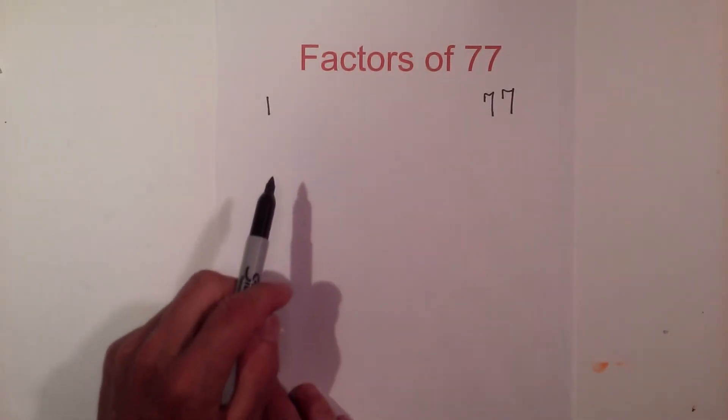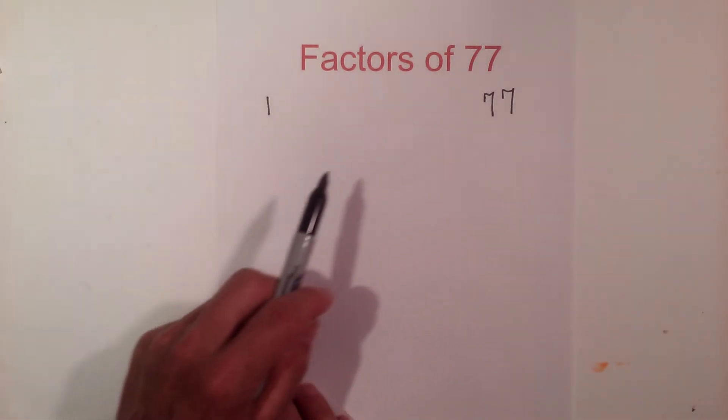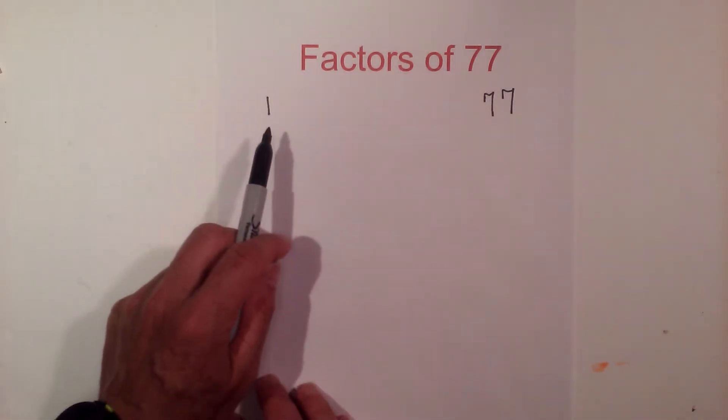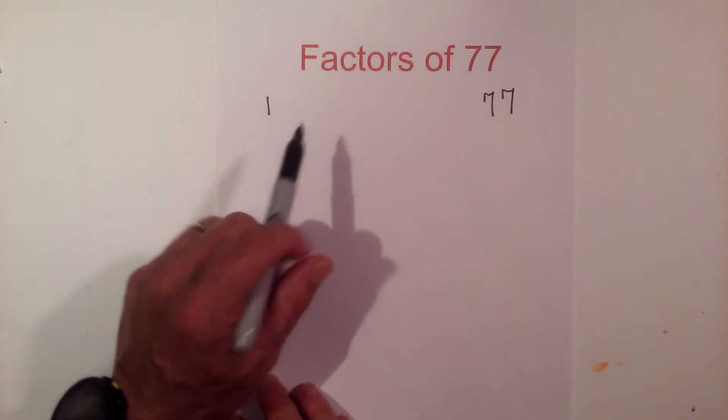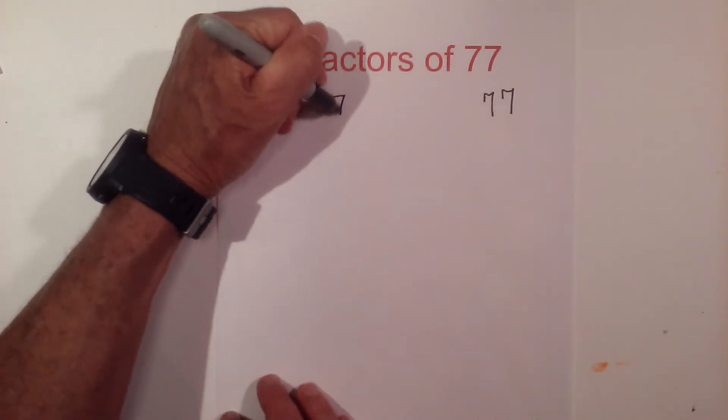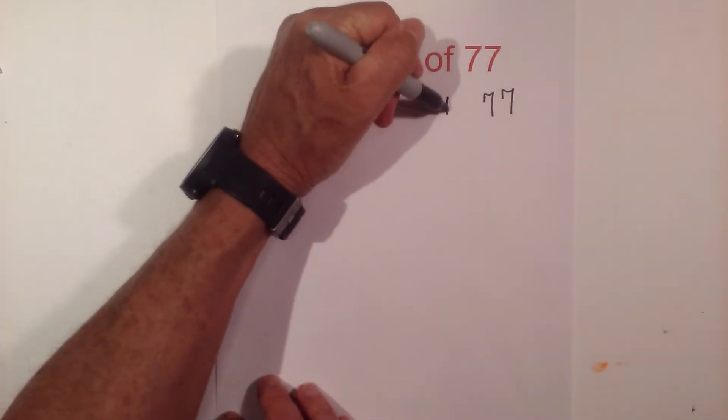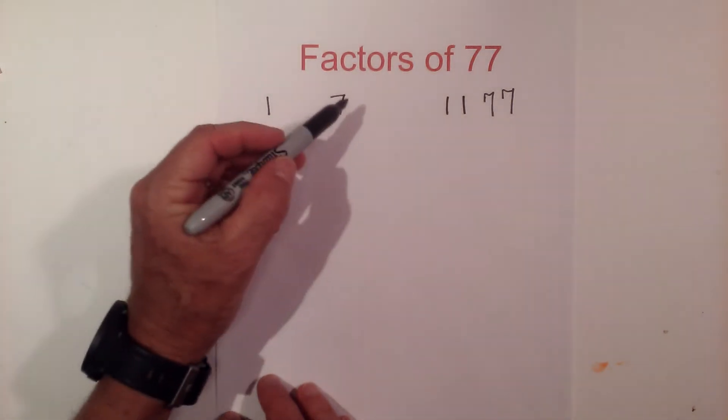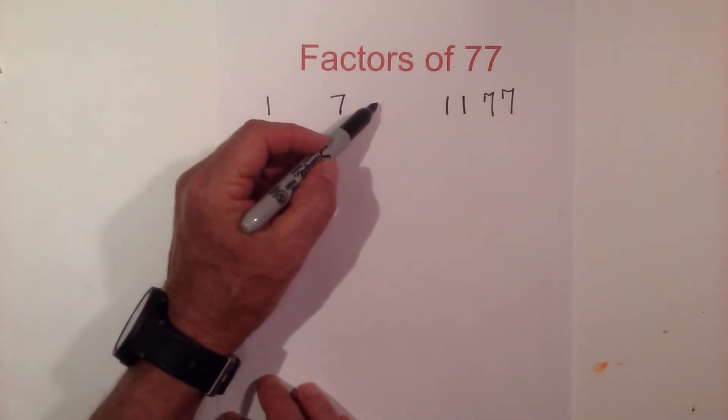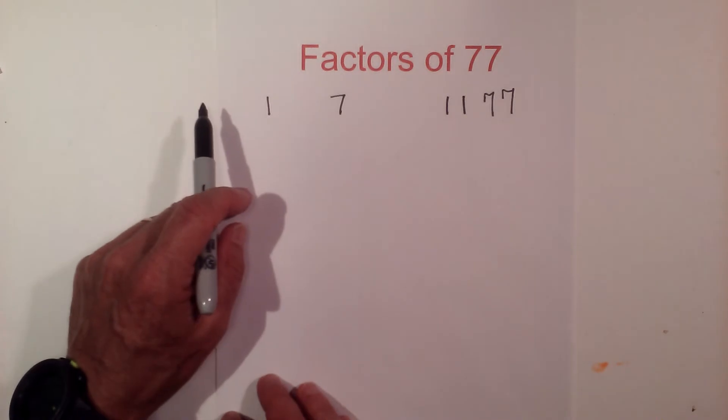2 will not go into 77, nor will 3, 4, 5, 6, but 7 goes into 77 11 times. 8 will not go in, 9 will not go in, nor will 10.